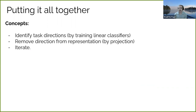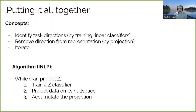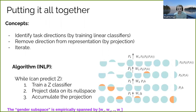We remove all the features responsible for encoding the gender information. The algorithm is quite simple: we iteratively train a classifier to predict the sensitive information from the representation, project the data onto its null space — neutralizing the features the classifier used — and accumulate these projections to exhaustively remove all different features responsible for this information.